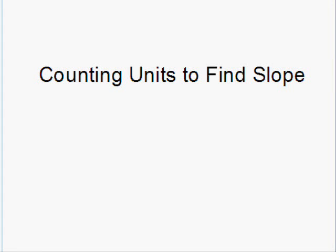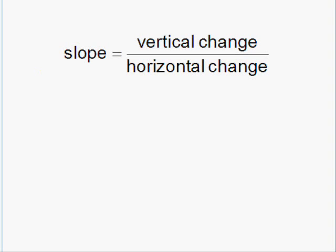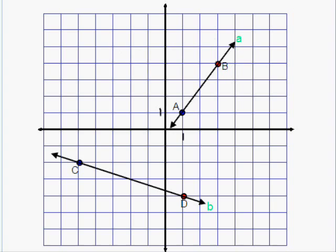This lesson is on counting units to find slope. Since slope measures the steepness of a line, you can find slope by counting the units of vertical change and dividing by the units of horizontal change. This formula is sometimes referred to as rise over run.